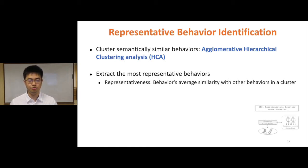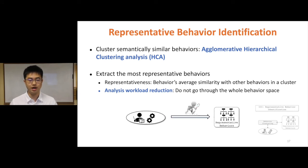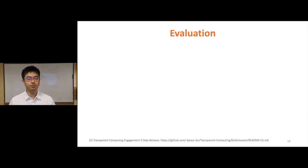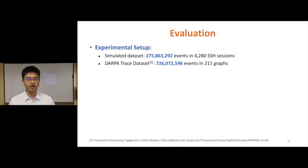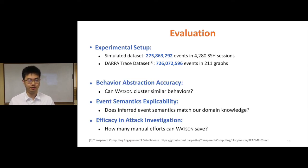We expect to see a substantial analysis workload reduction because analysts do not need to go through the whole behavior space to find potential threats and interesting behaviors. To evaluate Watson, we set up two experimental datasets: a simulated dataset collected in a controlled enterprise environment consisting of over 200 million events, and the DARPA trace dataset, a public APT dataset with over 700 million events. We implement Watson as a prototype and evaluate it on behavior abstraction accuracy, event semantics interpretability, and its efficacy in attack investigation.